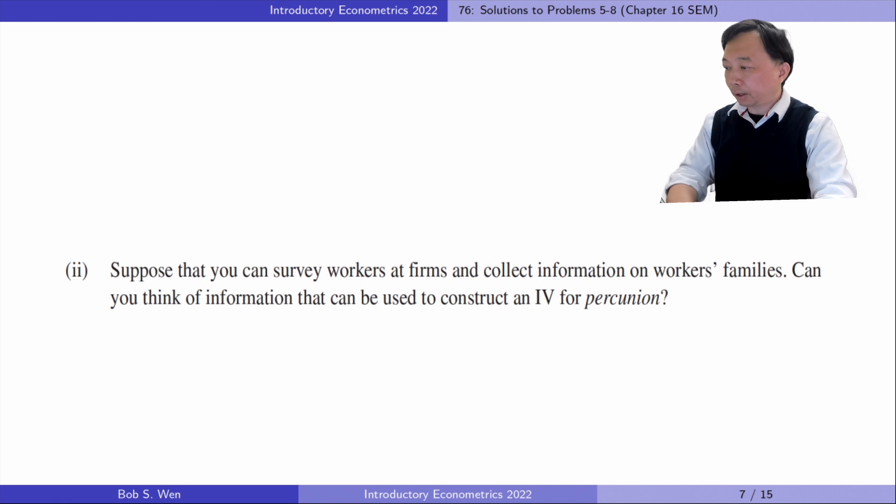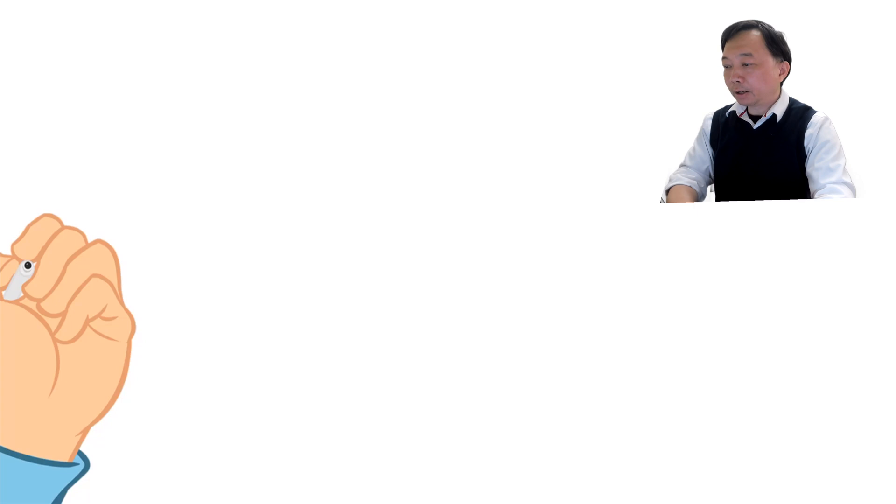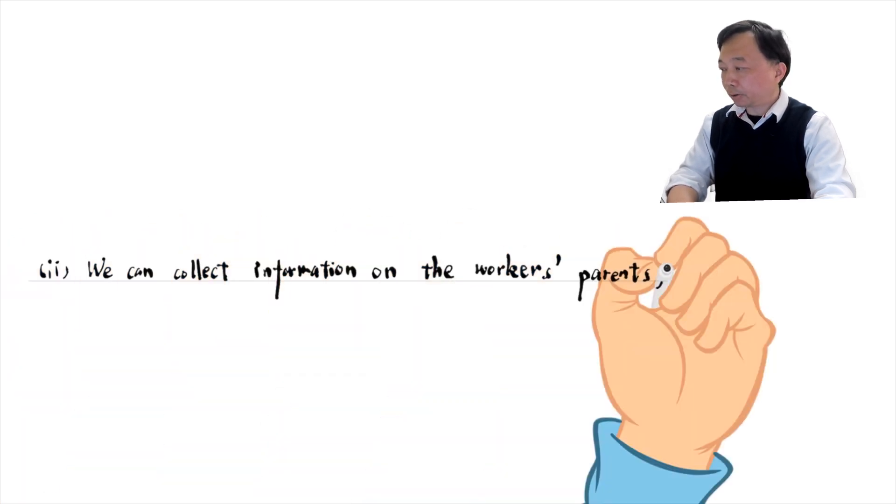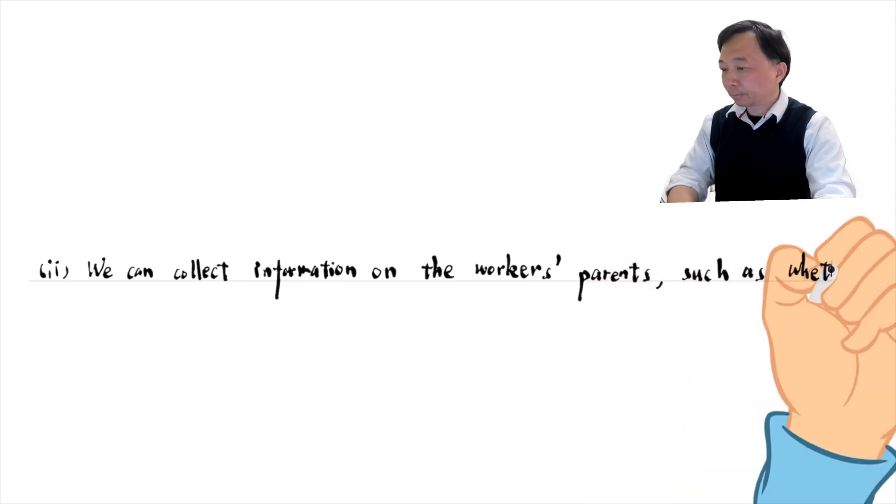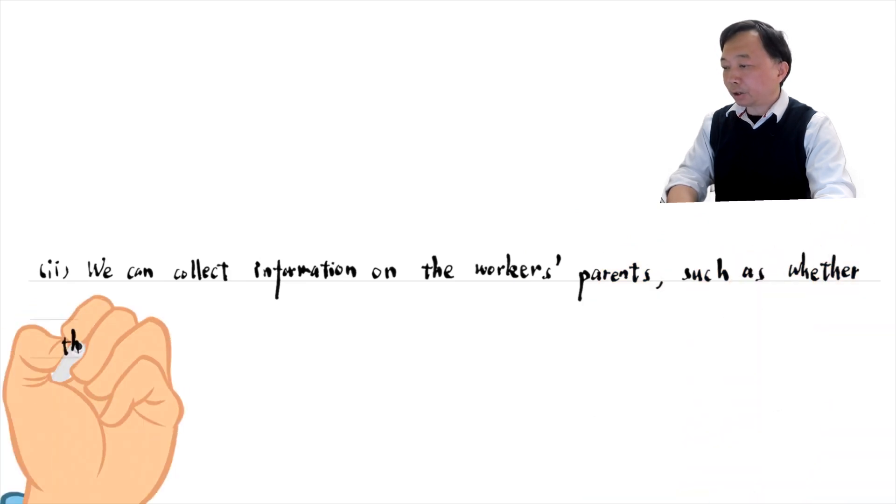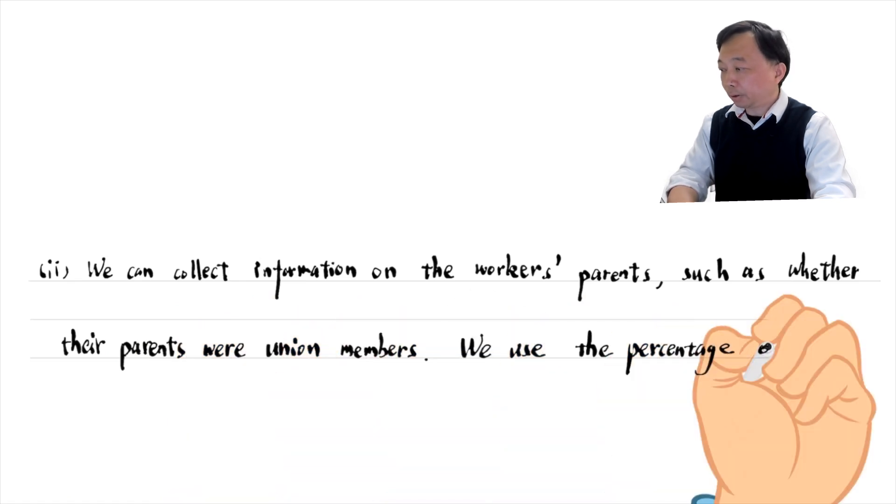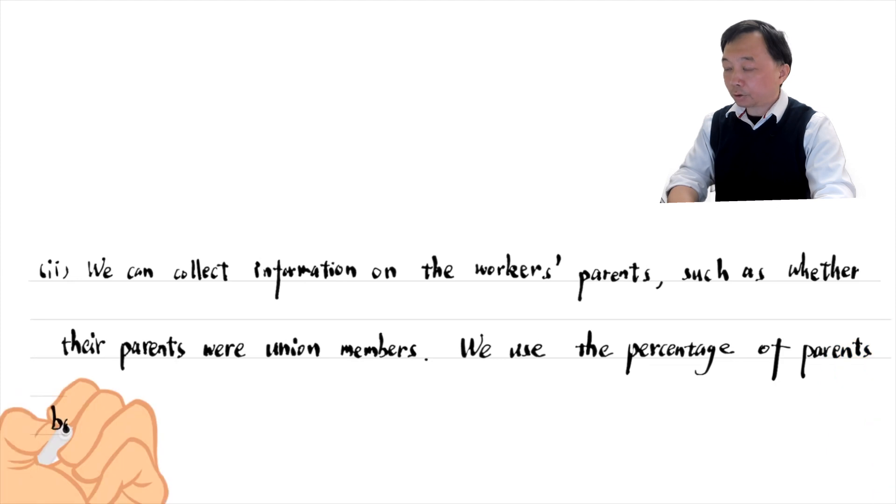In part two, suppose that you can survey workers at firms and collect information on workers' families. Can you think of information that can be used to construct an IV for percentage belonging to a union? We can collect information on the workers' parents, such as whether their parents were union members. We use the percentage of workers' parents belonging to a union as an instrumental variable for the percentage of workers belonging to a union.